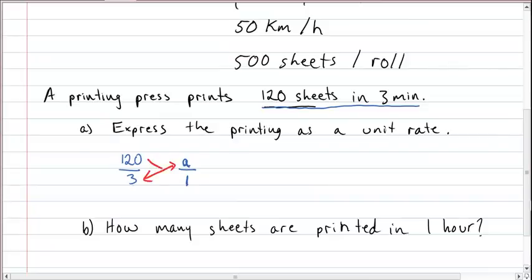And we can apply the same principles of cross multiplying and then dividing to figure out what a is. So we end up here by cross multiplying with 3 times a, so that's 3a, equals 120 times 1. Well, any number times 1 is that number. So 3a equals 120. Then we're going to divide both sides of the equation by 3. That'll cancel out our 3's. So we're left with a equals 120 divided by 3, which should be 40. So express the printing as a unit rate, you get 40 sheets per minute.